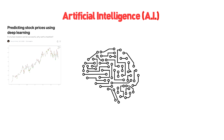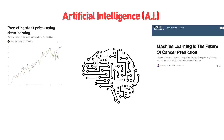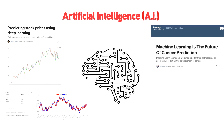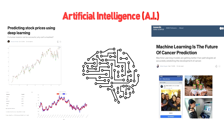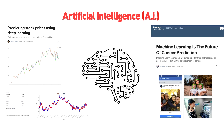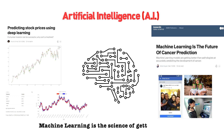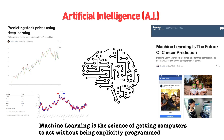With use cases from predicting the stock market to curing cancer, machine learning and AI are already revolutionizing our world as we know it. A term I've heard that really encapsulates the machine learning process is that machine learning is the science of getting computers to act without being explicitly programmed.